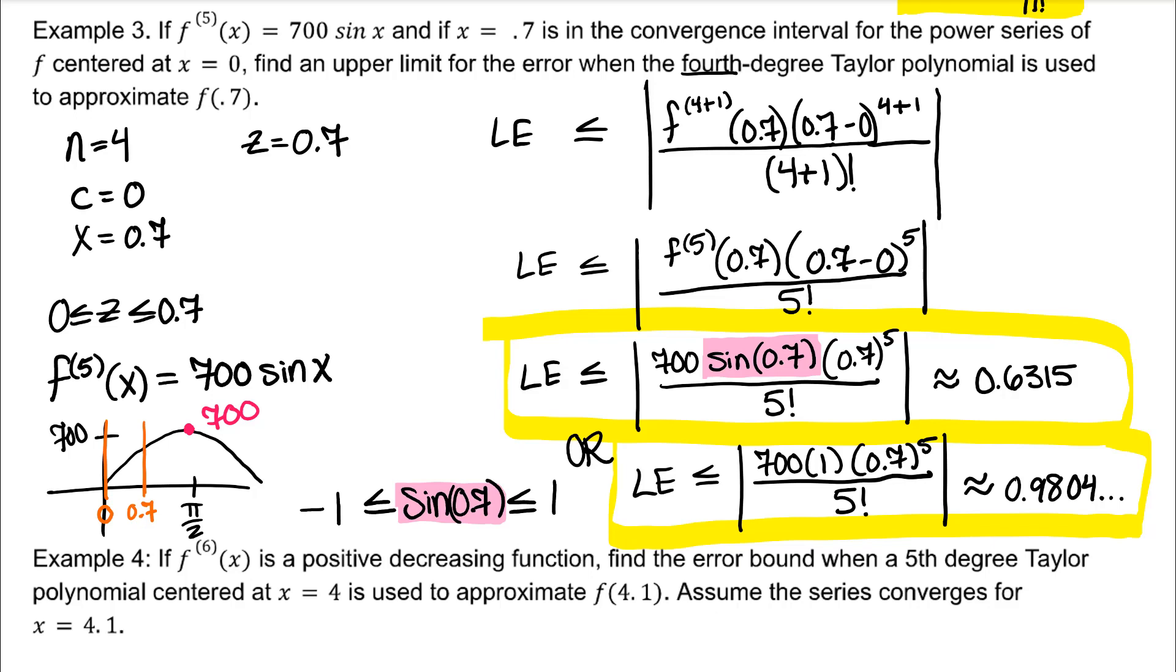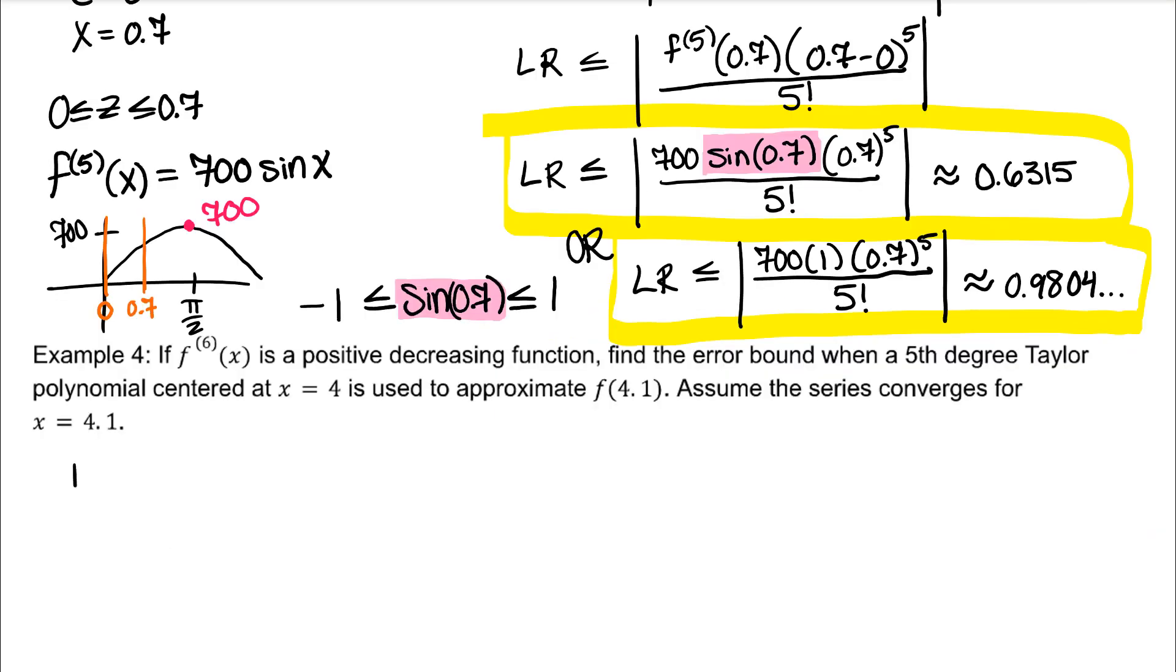Example 4. If the sixth derivative of f of x is a positive decreasing function, find the error bound when a fifth degree Taylor polynomial centered at x equals 4 is used to approximate f of 4.1. Assume the series converges for x equals 4.1. Let's get the essentials. I don't know what the function is. But I know it's positive and it's decreasing. So it's above the x-axis. And it's decreasing. So from 4 to 4.1, our max value is going to occur at the left endpoint or C. Z equals C, which is 4.